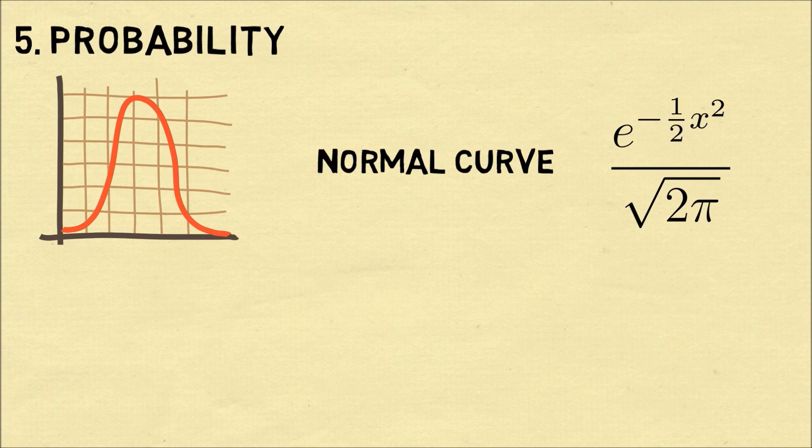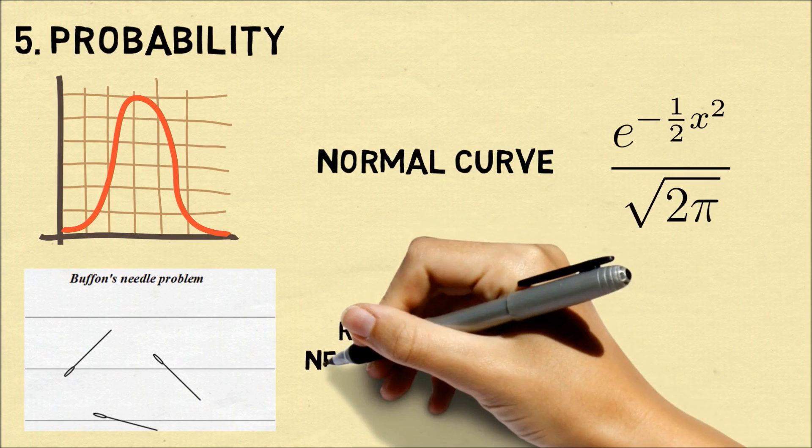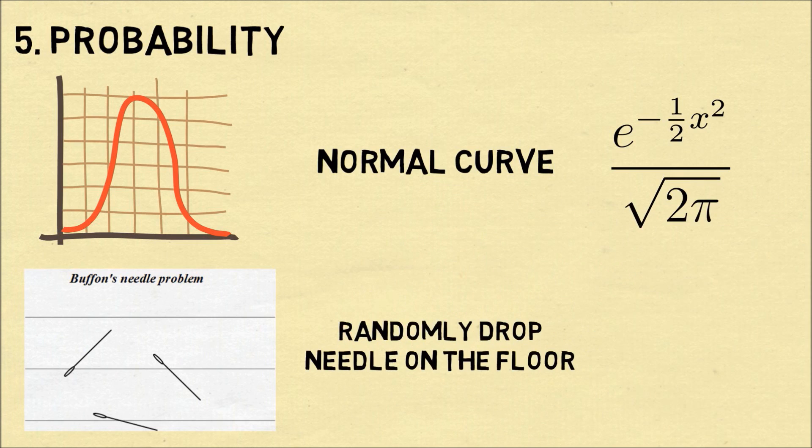Consider Buffon's needle problem. Imagine randomly dropping a needle of length L on a floor where the lines are one unit apart. What's the probability the needle will intersect with one of the lines? The answer is 2 times the length of the needle divided by pi. So unexpectedly, pi comes up even in probability.